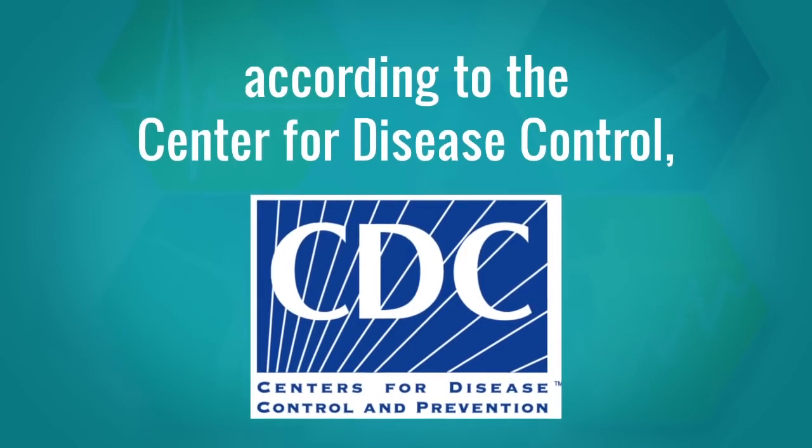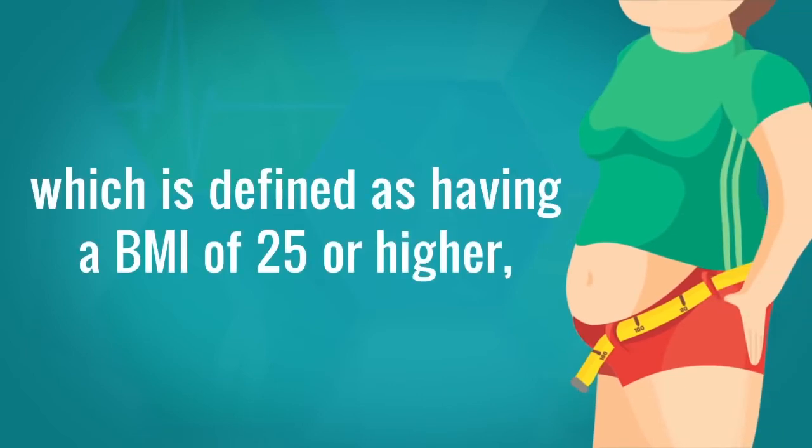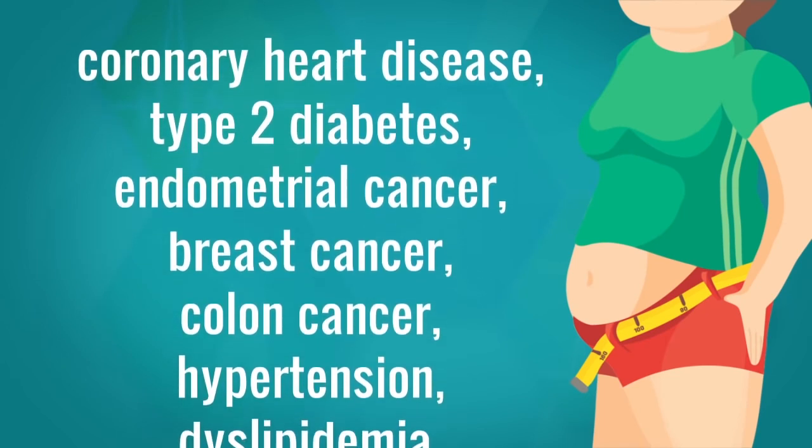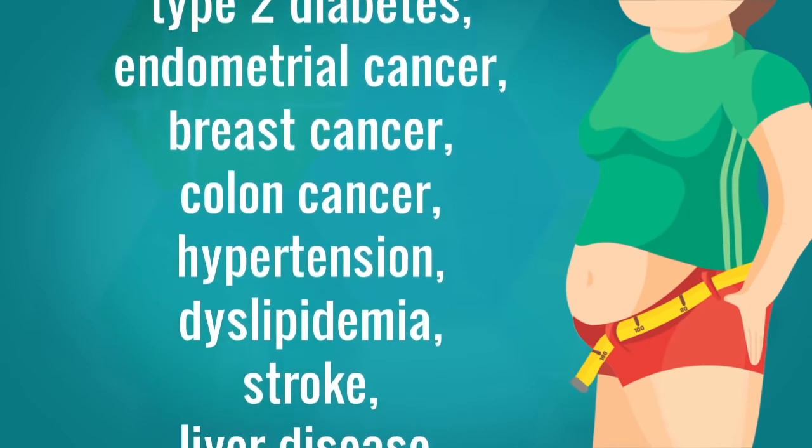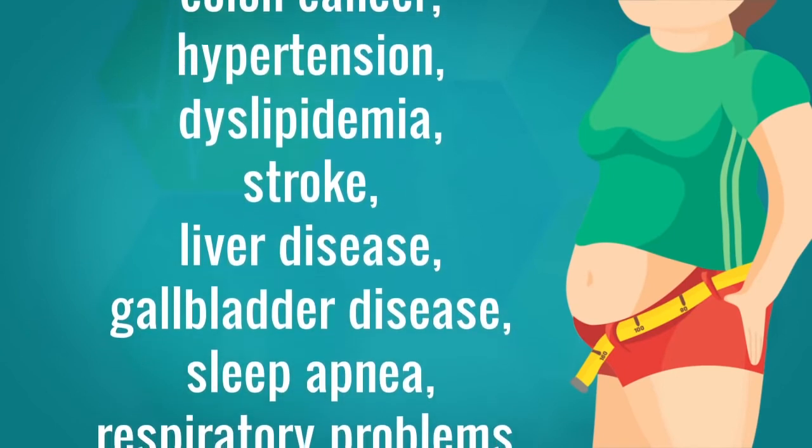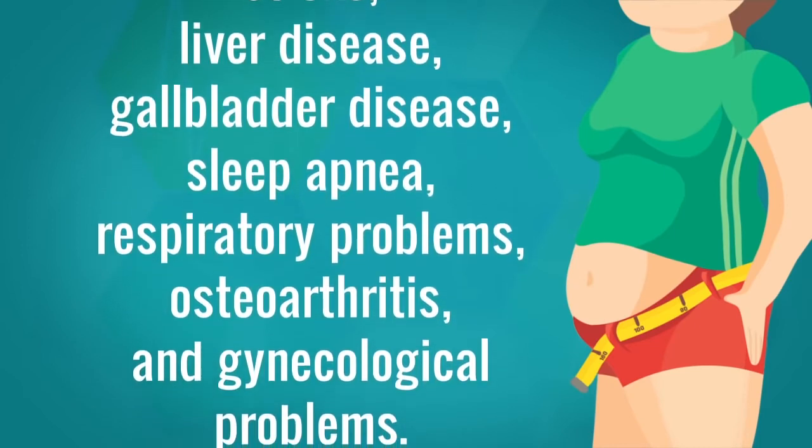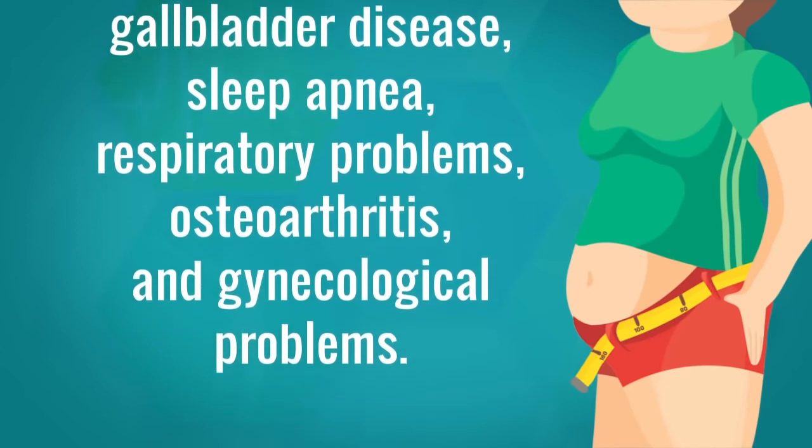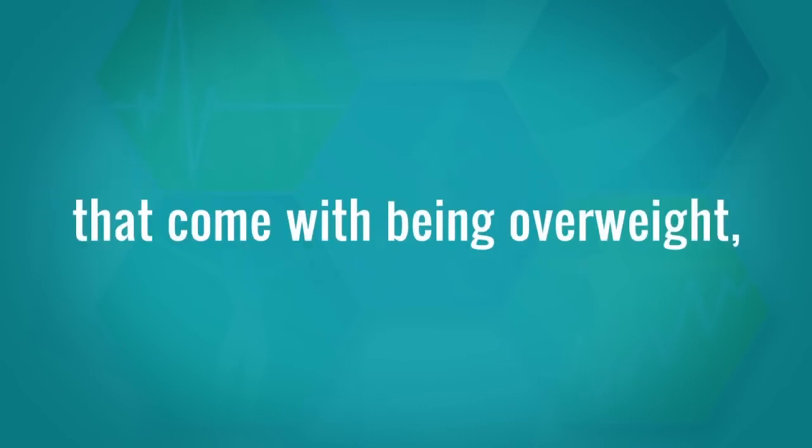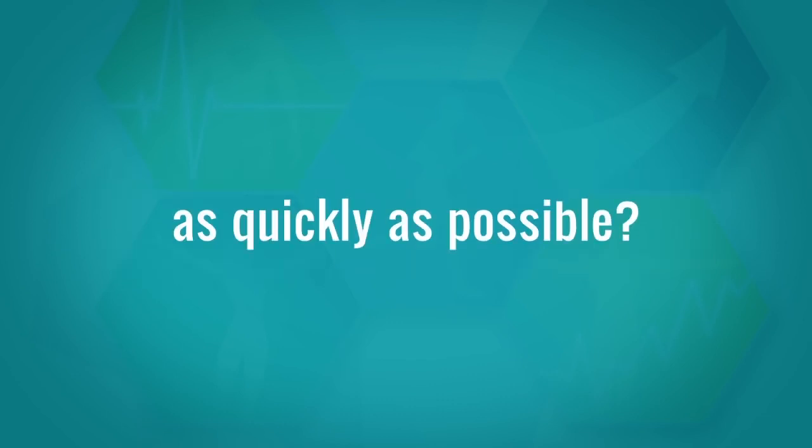Consider this. According to the Center for Disease Control, if you are overweight, which is defined as having a BMI of 25 or higher, you are way more susceptible to developing coronary heart disease, type 2 diabetes, endometrial cancer, breast cancer, colon cancer, hypertension, dyslipidemia, stroke, liver disease, gallbladder disease, sleep apnea, respiratory problems, osteoarthritis, and gynecological problems. Considering all the dreadful diseases and complications that come with being overweight, doesn't it make sense that you should get rid of extra weight as quickly as possible?